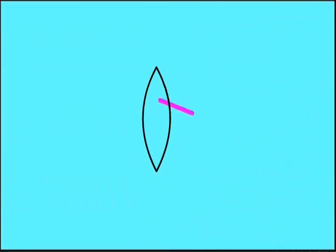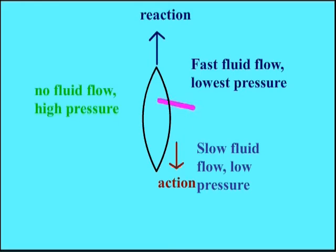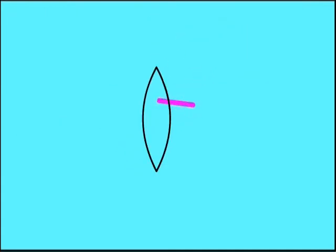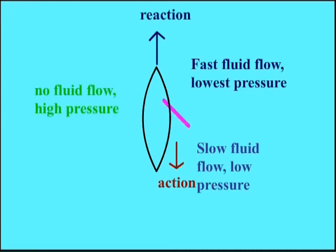Take for instance, a paddler who sits on the right of a boat. As he paddles forward, an action-reaction pair is created. Fluid flow at the back of the boat is slower than the front due to water resistance. This creates three different regions of pressure as you see in the video.